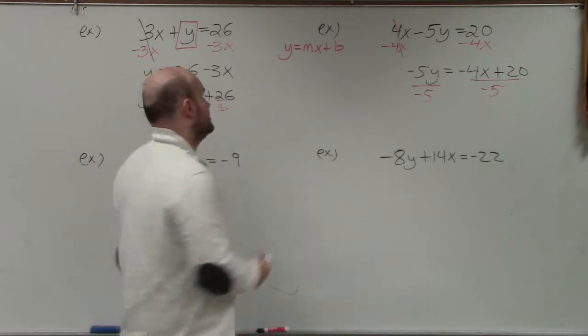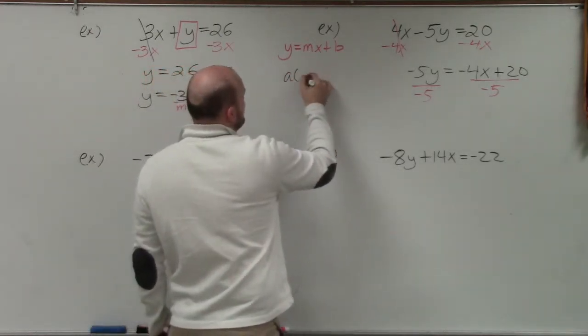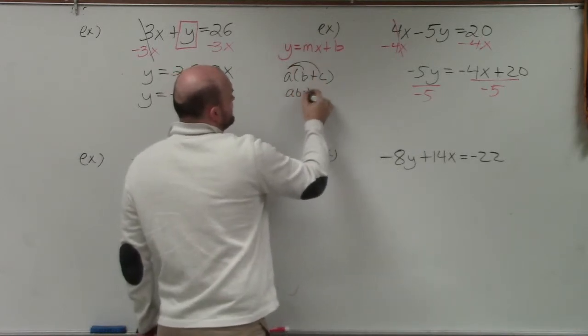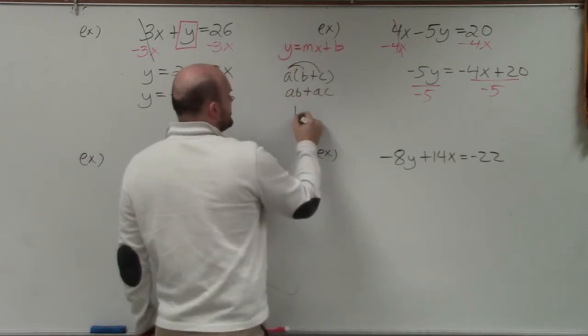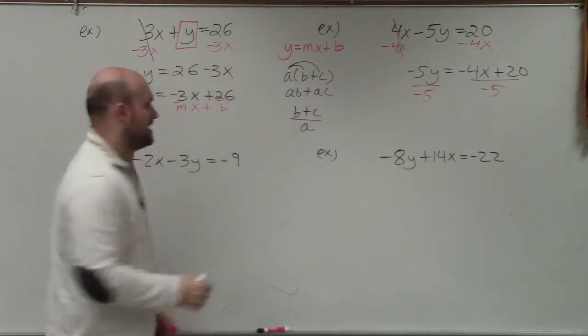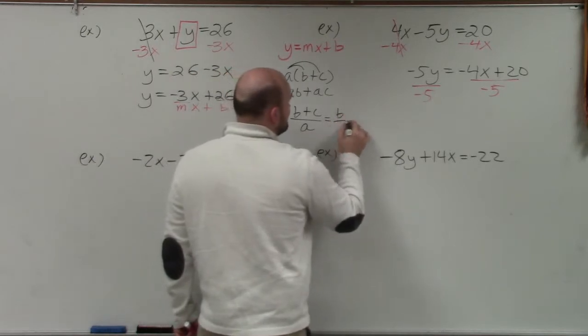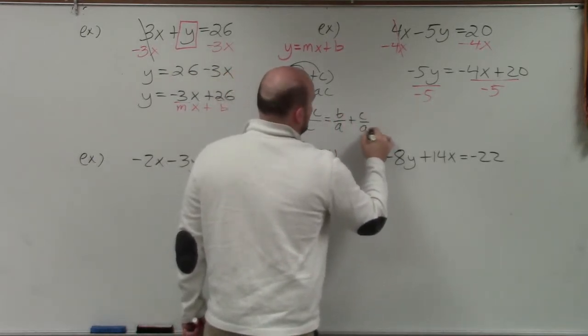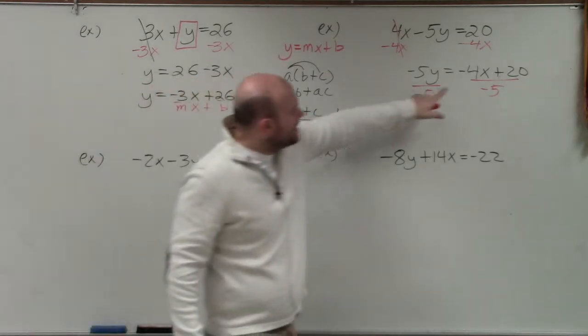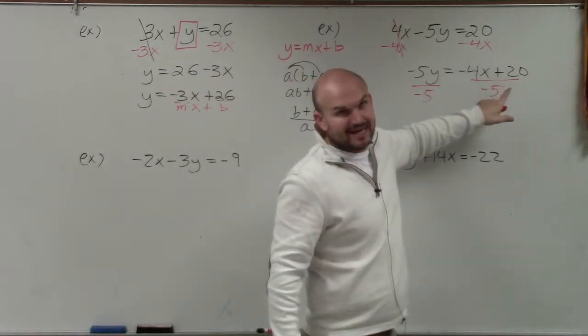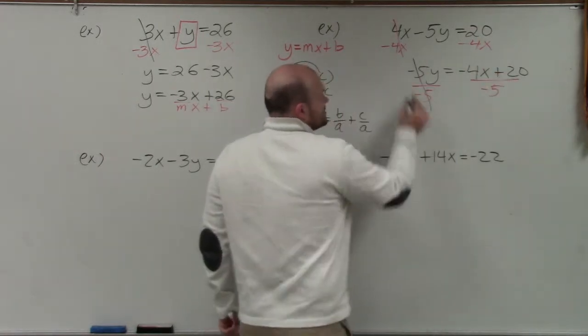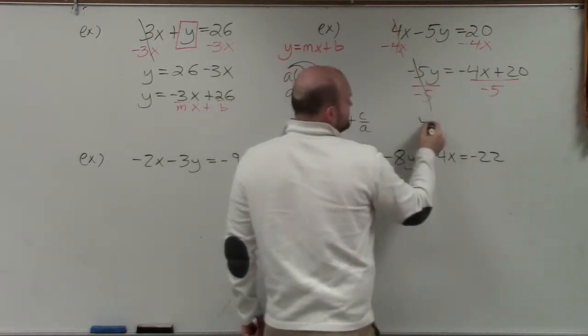One step that gets students all the time. Students are pretty good with distributive property. They say, distributive property, A times B plus A times C. But distributive property works the same way with division. If I have B plus C divided by A, that's the same thing as B over A plus C over A. It's the same thing as multiplication with distributive property. So when I'm dividing these two terms by negative 5, this negative 5 divides into both of them. Negative 5 divided by negative 5 is y, so that's y equals.